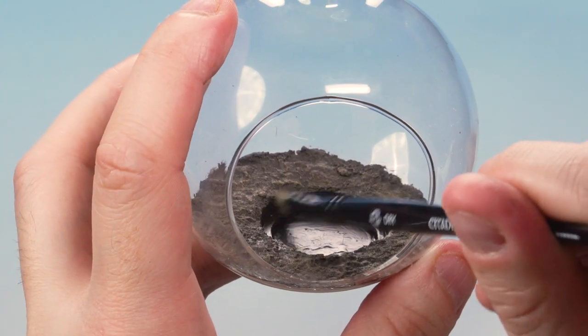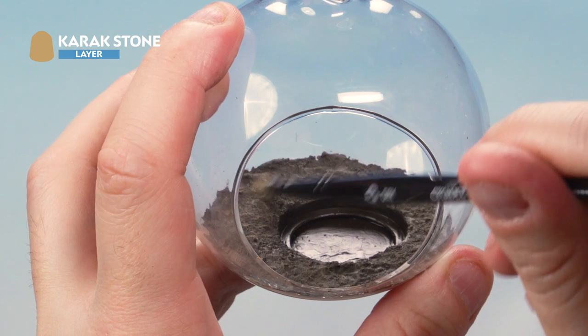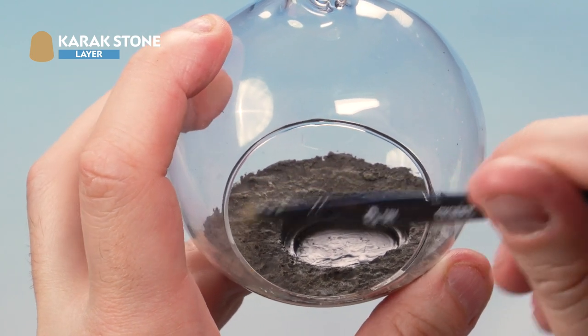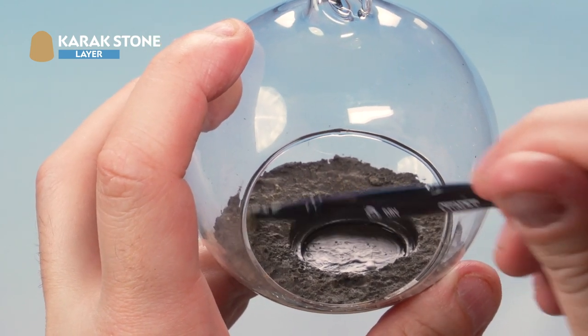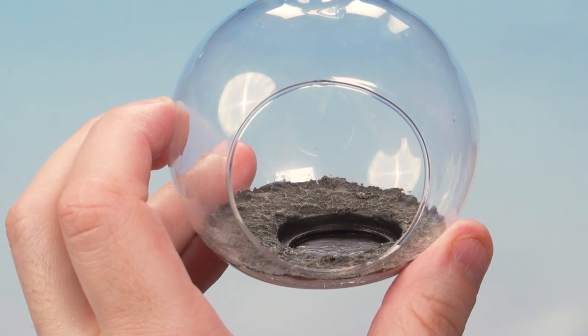Up next we're applying a second dry brush, this time of Karak Stone. Again, applied all over the top where we put the Stirland Mud.